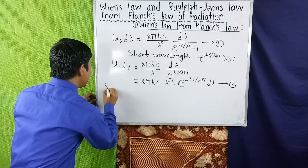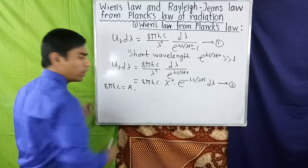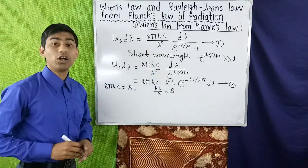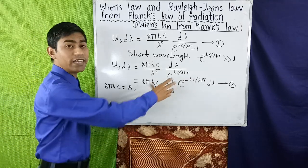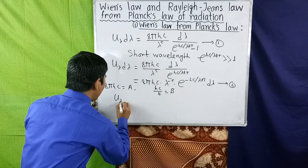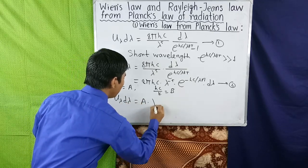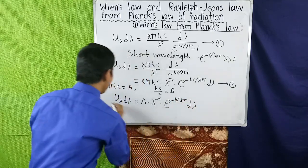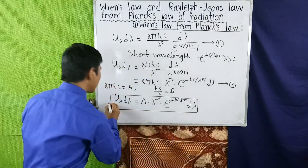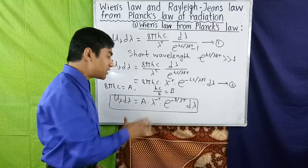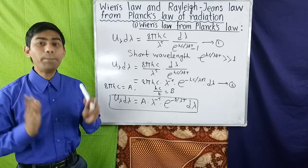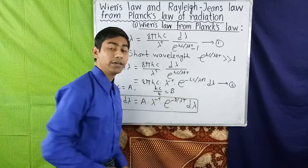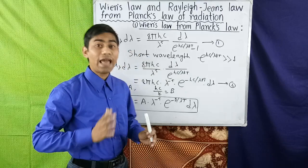Let 8πhc = a, where a is a constant, and let hc/k = b, where b is also a constant. Using this, equation 2 can be written as u(λ) dλ = a × λ^(−5) × e^(−b/λT) dλ. This is Wien's radiation law, which is an empirical formula containing two adjustable constants a and b. So we have derived Wien's law from Planck's law of radiation.